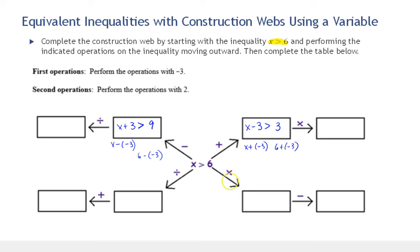Moving on to multiplication: we're going to multiply both sides by negative 3. We have negative 3 times x on the left and negative 3 times 6 on the right. Since it's multiplication by a negative, we need to reverse the sign. So negative 3x is less than negative 18.